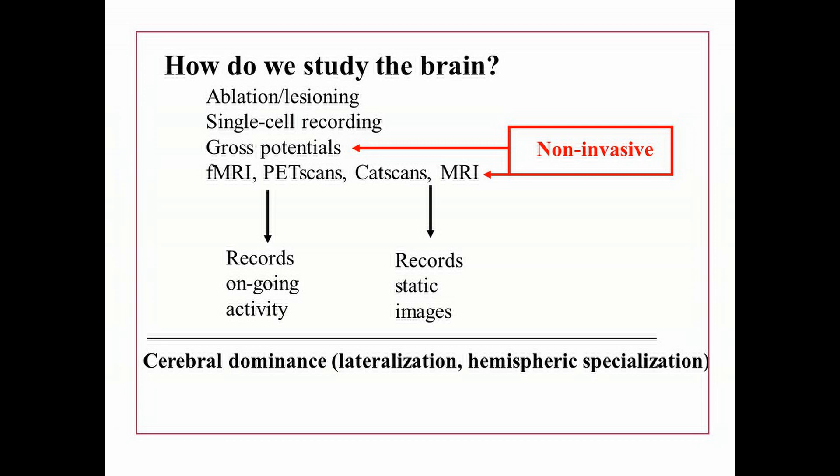There are techniques such as ablation and lesioning. Ablation involves deliberately damaging large portions of the brain, typically in non-human animals after careful ethical considerations, then allowing the animal to recover and seeing how behavior might change. Lesioning involves more precise damage to different parts of the brain, then allowing the animal to recover and seeing if there are any behavioral changes as a result of the surgery.